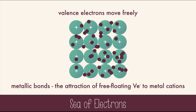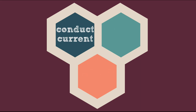These freely moving electrons give metals some of their useful properties, like conducting current, because electrons can freely flow in them, or ductility, which means that they can be drawn into wires, or malleability, which means that they can be hammered and forced into shapes. All of these properties are due to the freely moving valence electrons.